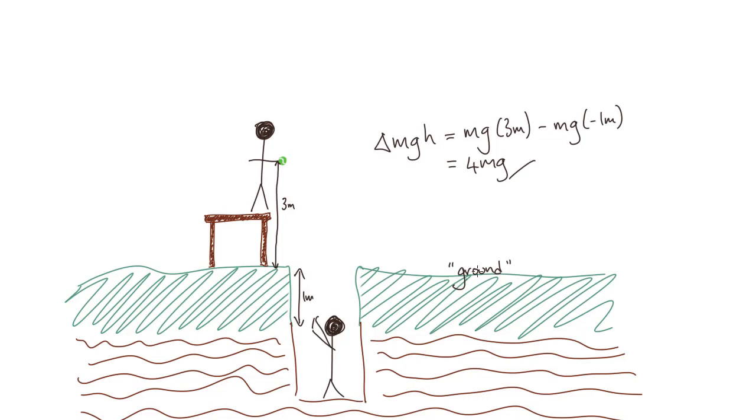However, we can also choose to place our reference point, or our ground, at minus 1 meters. We know that the ball is initially at a height of 4 meters. If we plug these numbers into our potential energy equation, we find that 4mg is just 4mg, and we have our result.